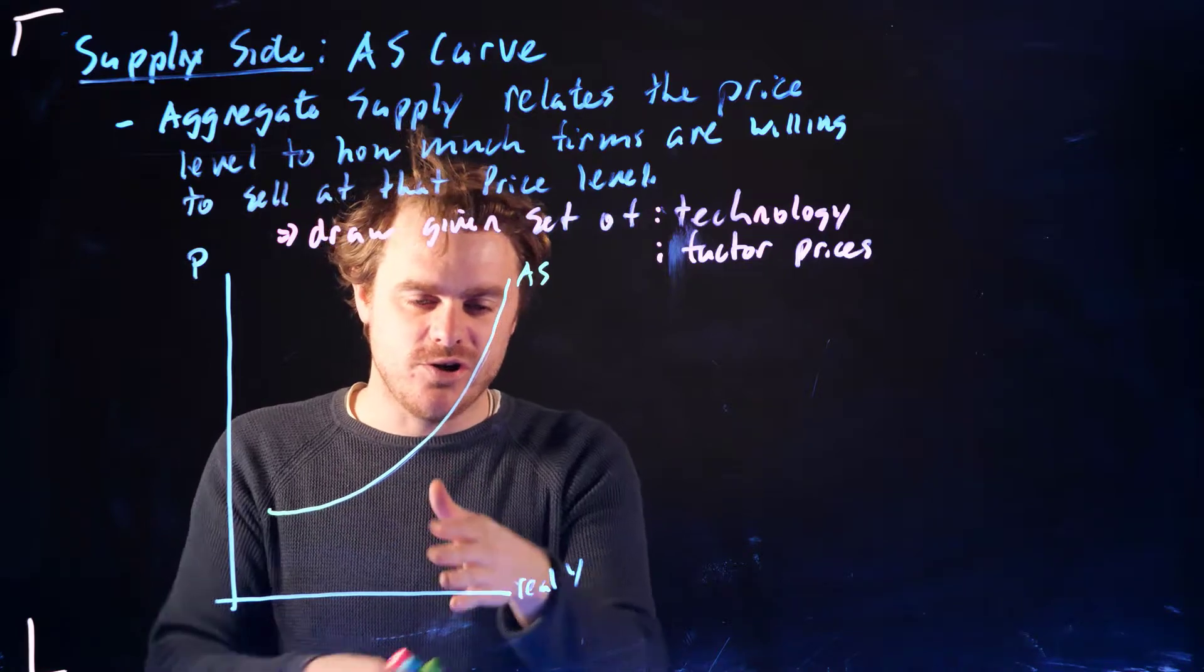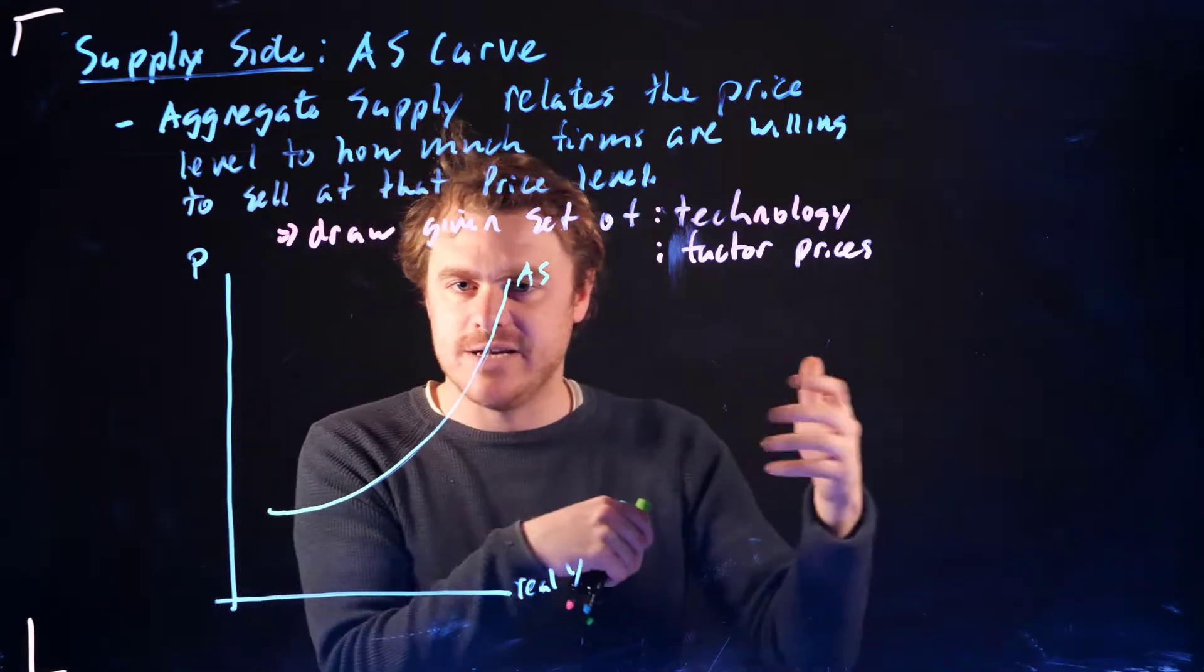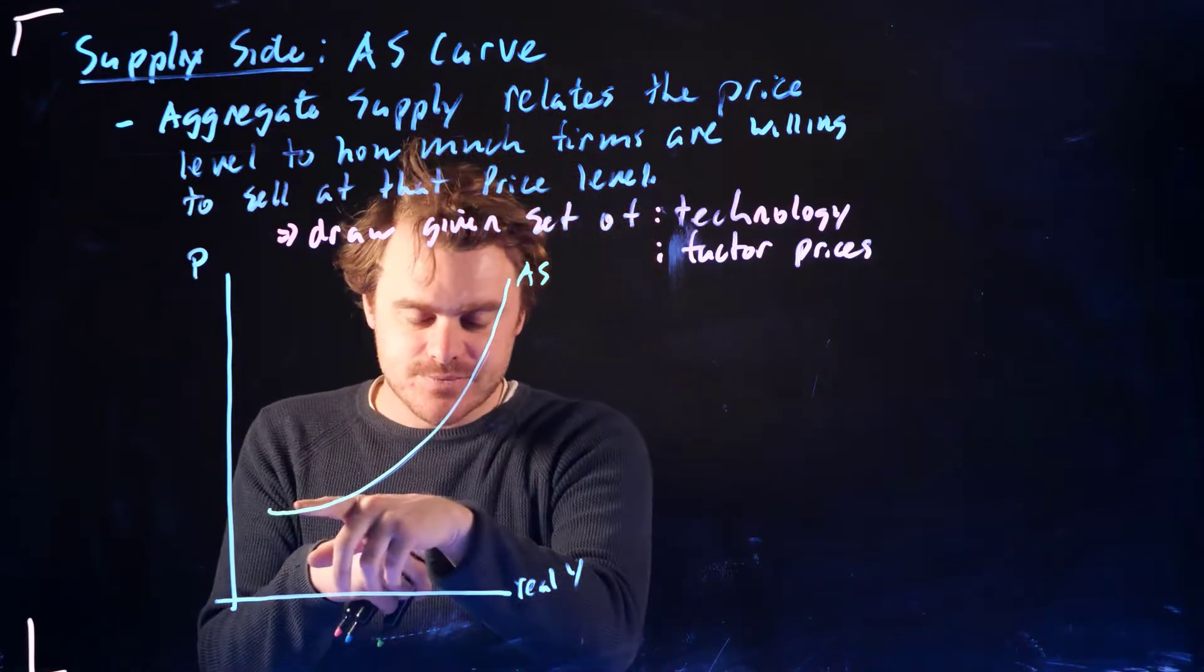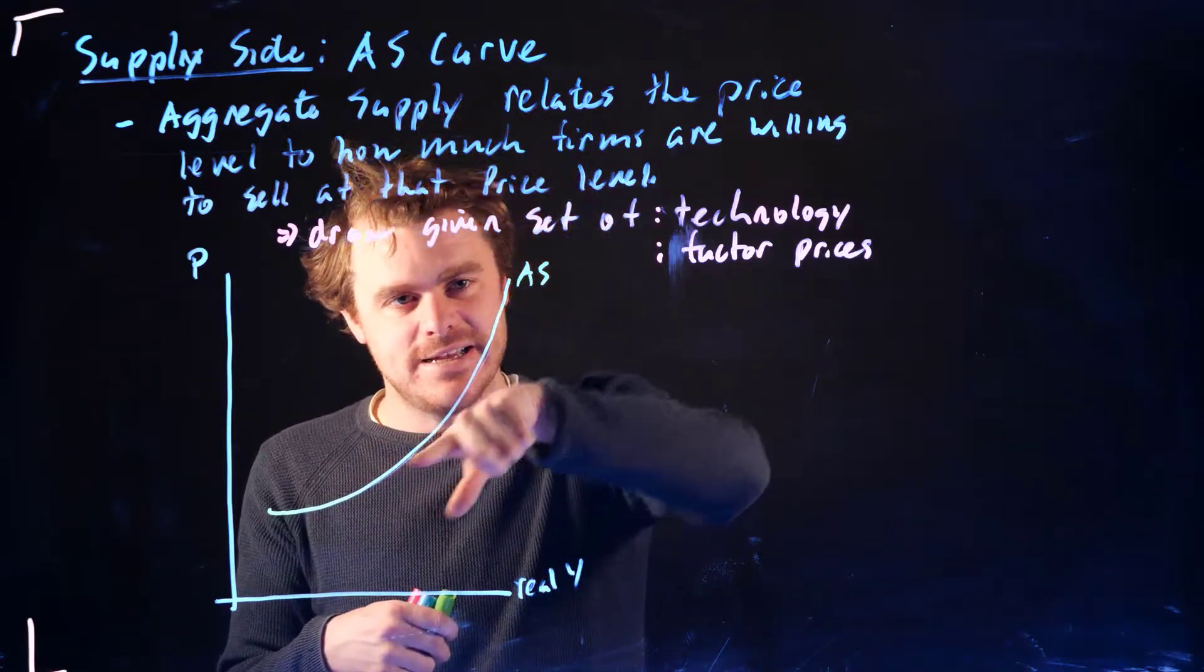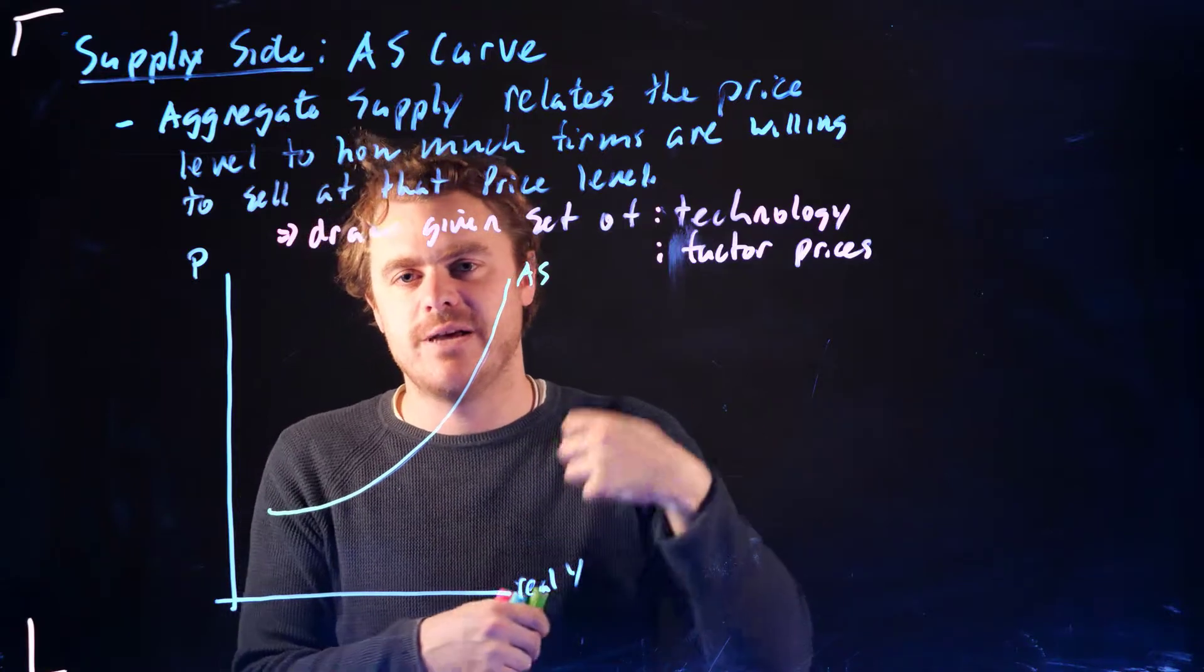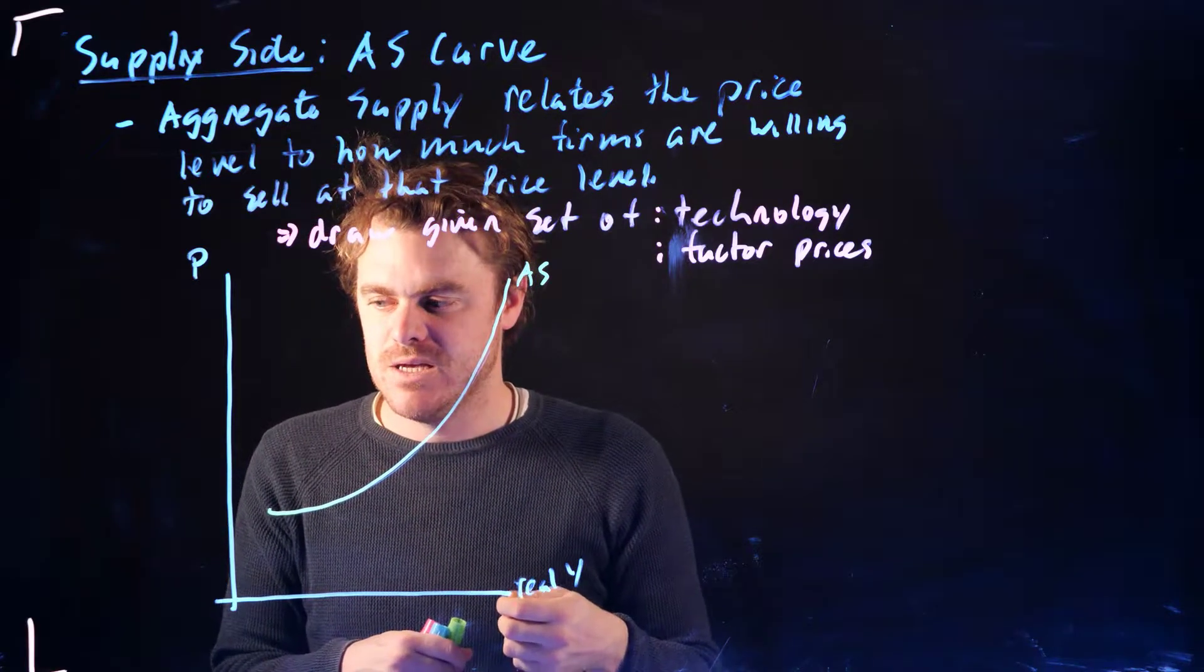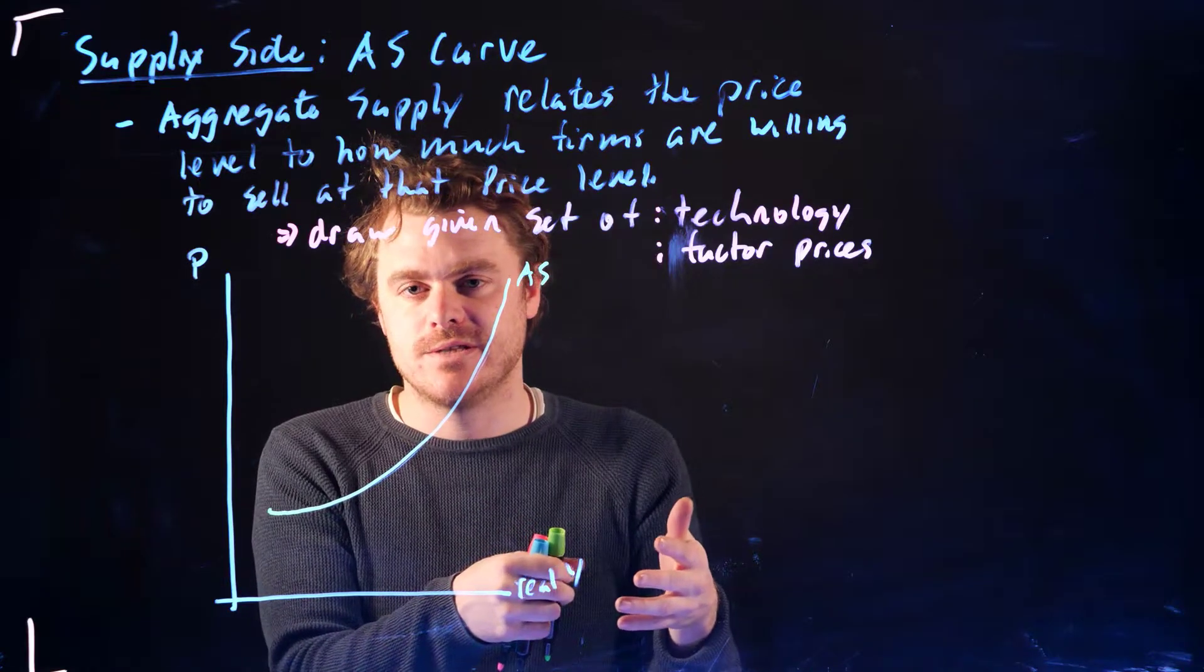So as we get closer and closer, and we're going to relate this to potential output and Y-star eventually. But as real output gets higher and higher, maybe I should move my axis over a bit, but it's going to get steeper and steeper because firms have to raise their prices so much to be willing to supply more to the market.